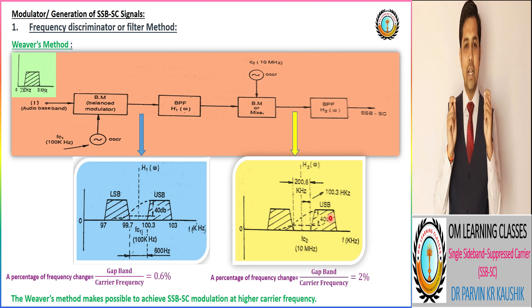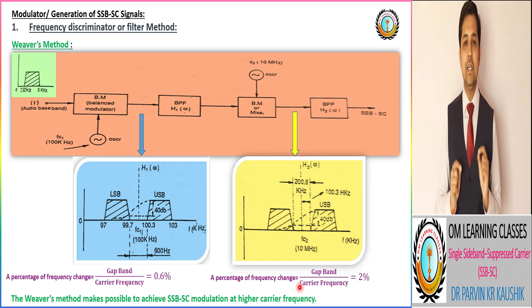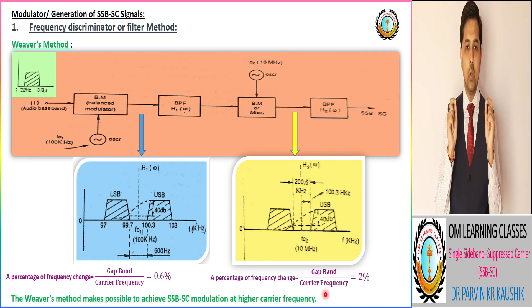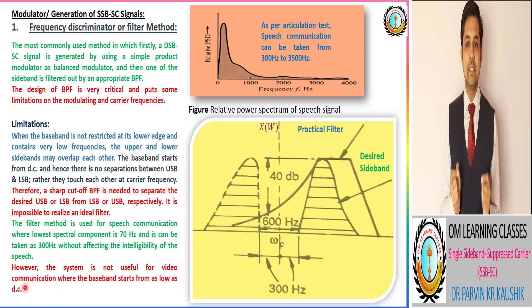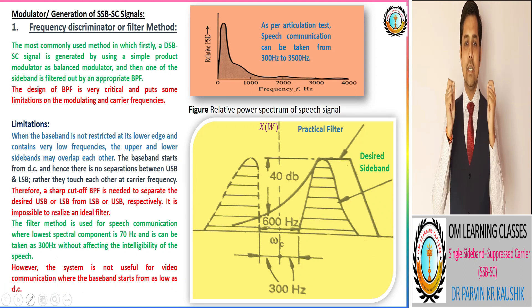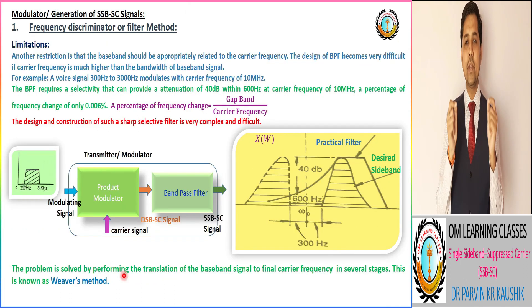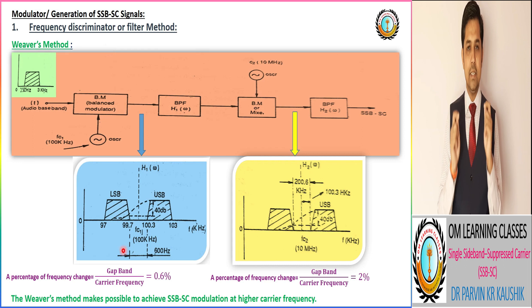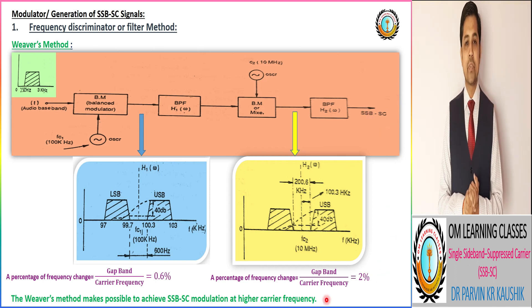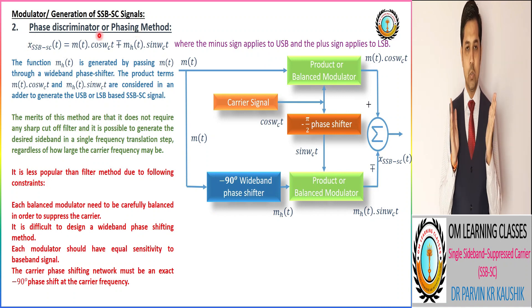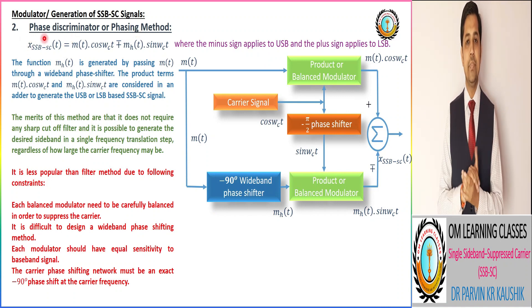The final outcome of the first method is that the filter method is not useful for video transmission in which the baseband signal starts from as low as DC. So this method can be utilized for speech communication, and in speech communication we utilize the block diagram of the Weaver method for getting our desired SSB signal. After the filter method, the next SSB modulator or generation method is known as the phase discriminator or phasing method.